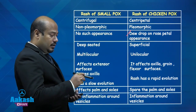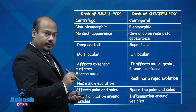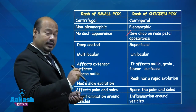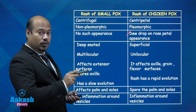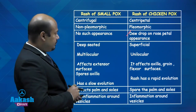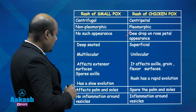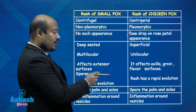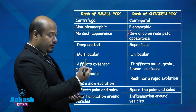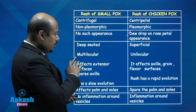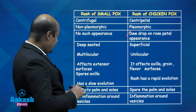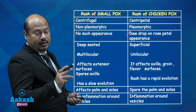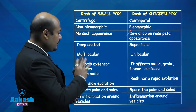Another difference: the rash of chickenpox is superficial, whereas the rash of smallpox is a deep-seated rash. Because it's a deep rash, it can cause tissue damage — that is why smallpox was more dangerous. Smallpox rash affects the extensor surface and spares the axilla, whereas chickenpox affects the axilla, groin, and flexor surfaces. The rash of smallpox also affects the palm and sole, whereas in chickenpox the palm and sole are not affected.